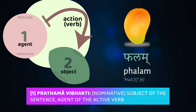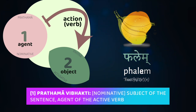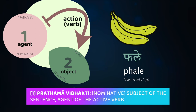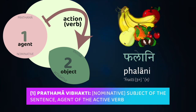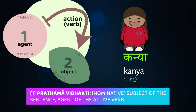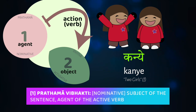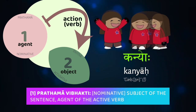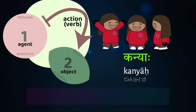For neuter words, let's take the word phalam, which means fruit. We're going to get: phalam, one fruit; phale, two fruits; and phalani, three or more fruits. For feminine words ending in a, let's take kanya, meaning girl. We'll get: kanya, one girl; kanye, two girls; and kanyaha, three or more girls.